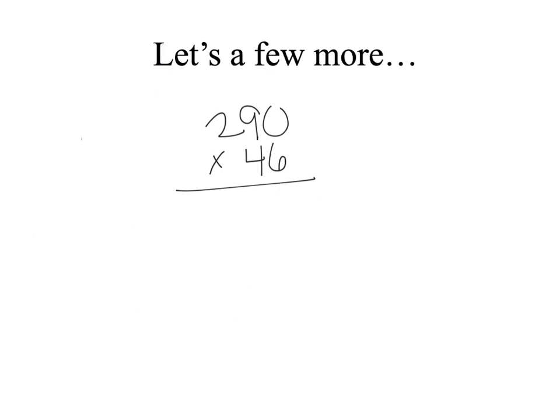Let's do one more example. And let's challenge ourselves this time with a three-digit number. For this problem, let's do 290 times 46. Let's use break-apart to break apart the 46 into 40 and 6, but leave 290 the same.